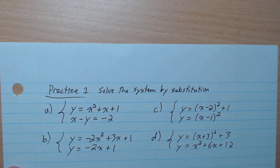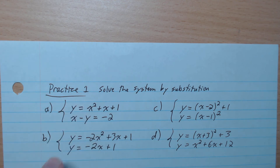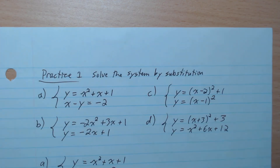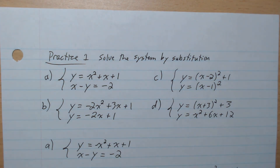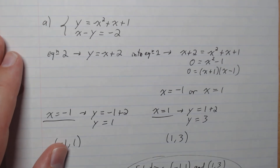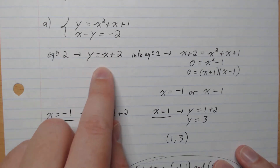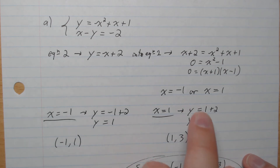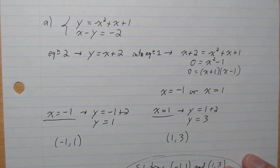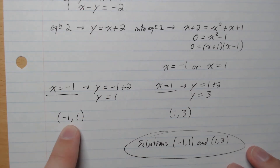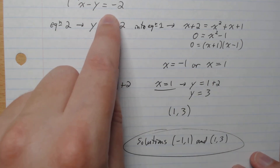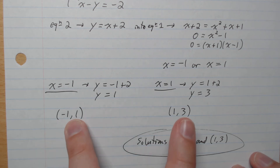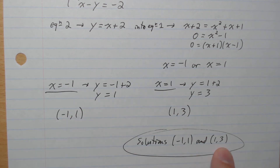Practice number 1: solve the system by substitution for parts A, B, C, and D. Part A: isolate y in the second equation to get y equals x plus 2, then plug into the first equation. Putting it all on one side gives x squared minus 1, which factors to (x + 1)(x - 1), so x equals negative 1 or x equals 1. When x = -1, y = 1; when x = 1, y = 3. The two solutions are (-1, 1) and (1, 3).